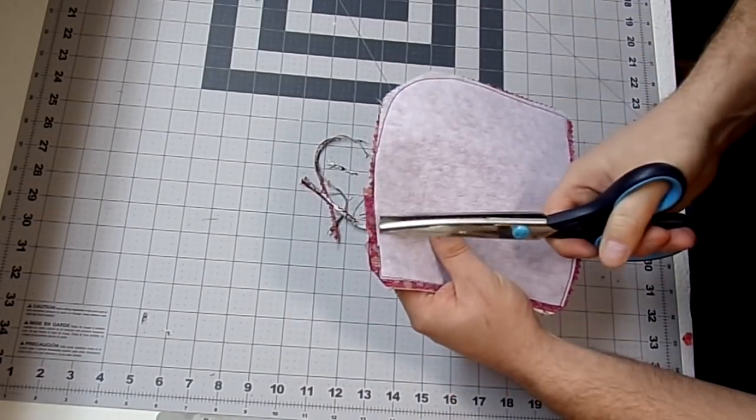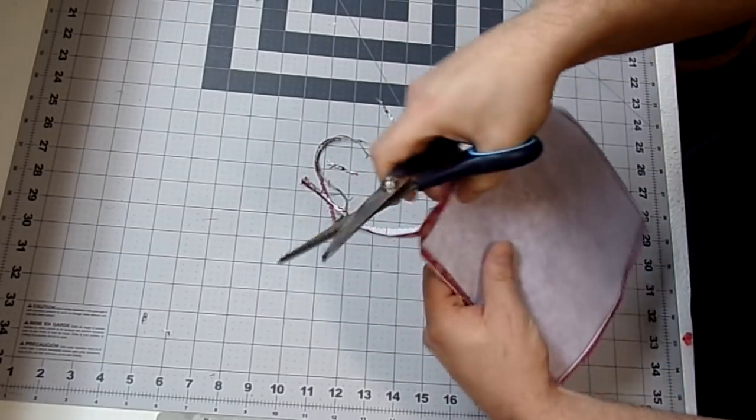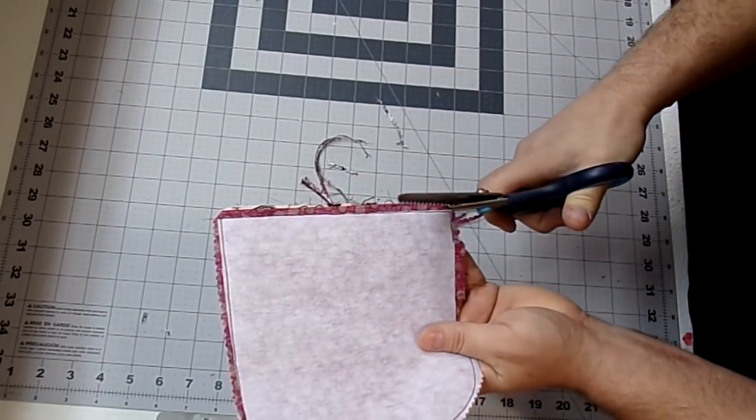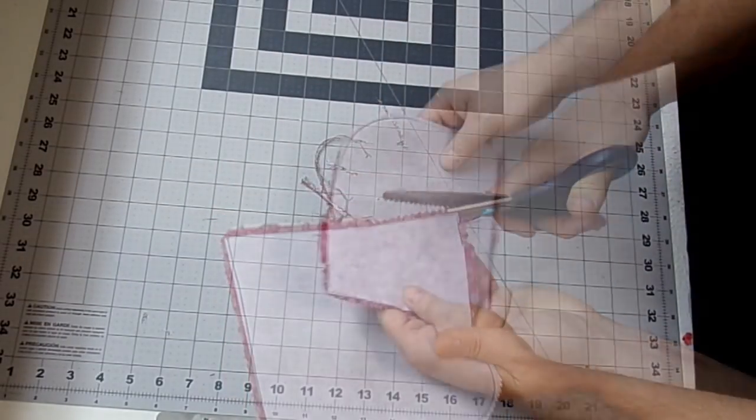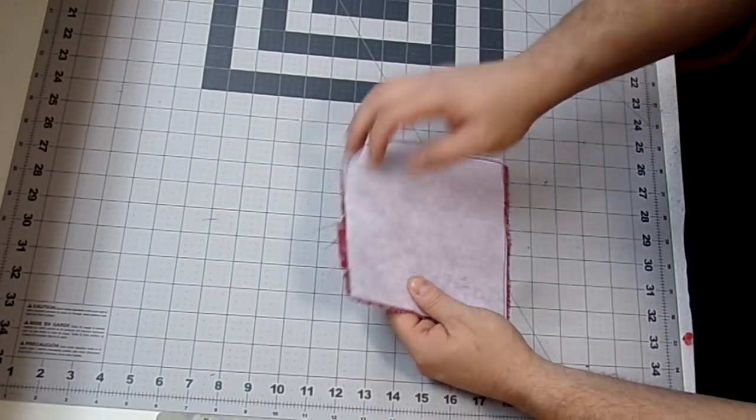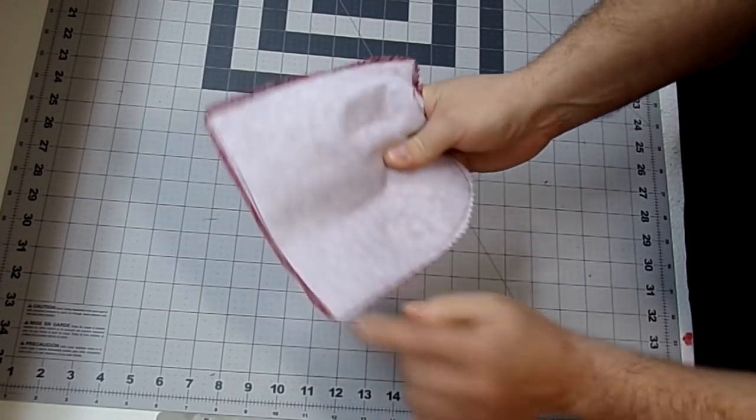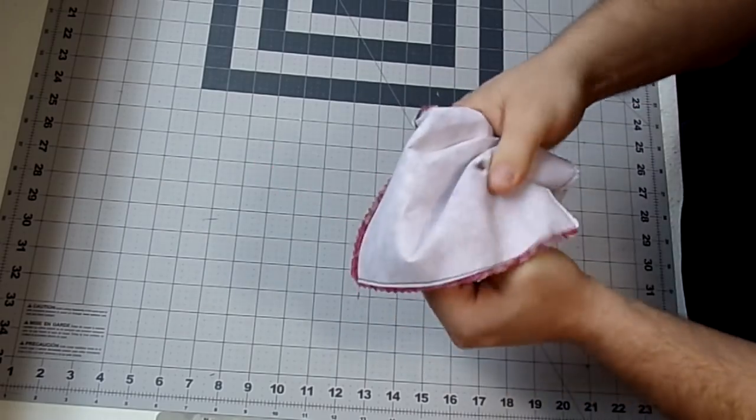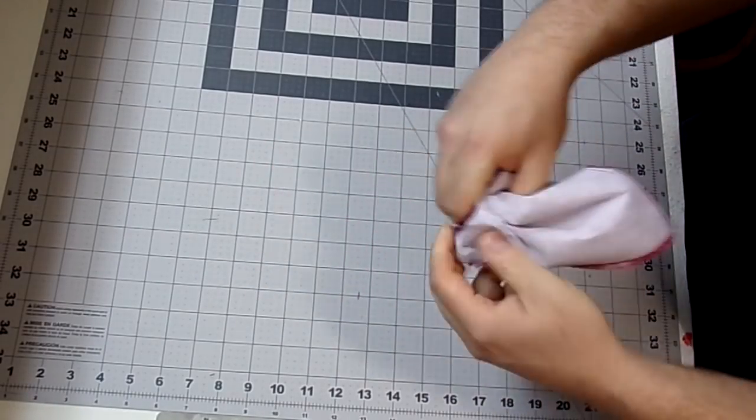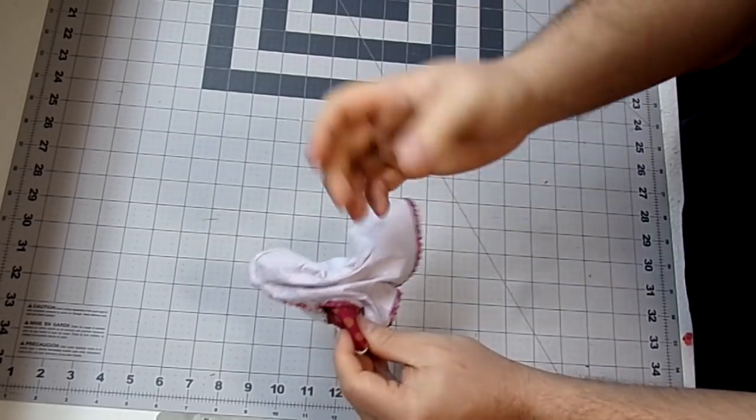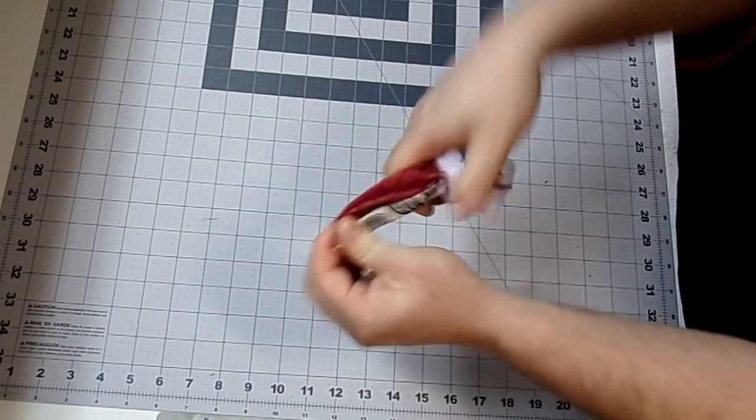And I'm not going to clip my extra fabric at my opening. The next step we're going to do is turn this right side out. So at your opening, you want to go down to this opposite corner. I'm going to push that corner through. I'm going to hold right here and just pull.